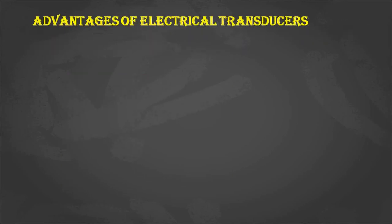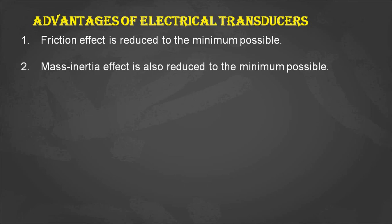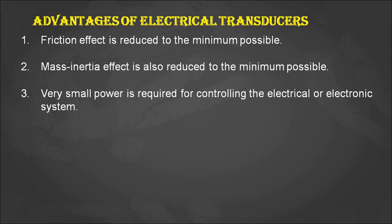Now let's see the advantages of electrical transducers, which overcome almost all the disadvantages of mechanical transducers. First, the frictional effect is reduced to the minimum possible, because most electrical transducers have no moving parts. The mass and inertia effect is also reduced to a minimum, because the size and weight of electrical transducers is very less. Due to the non-existence of rotating parts, inertia will also be less. Very small power is required for controlling electrical or electronic systems compared to mechanical systems.